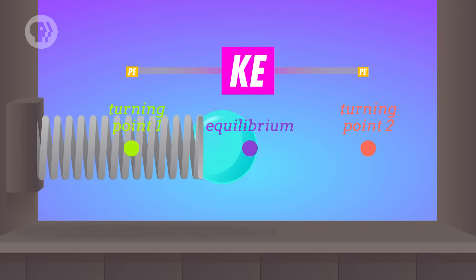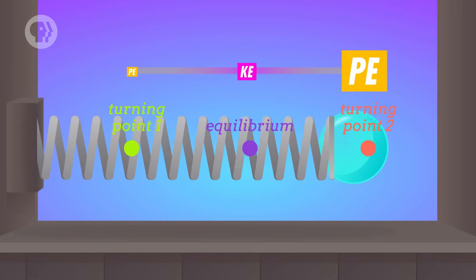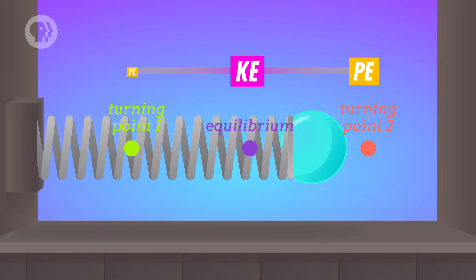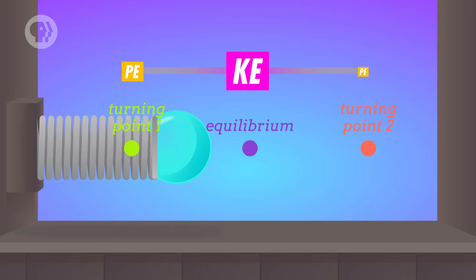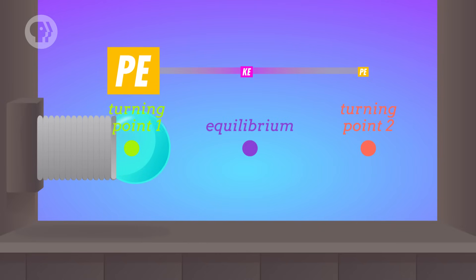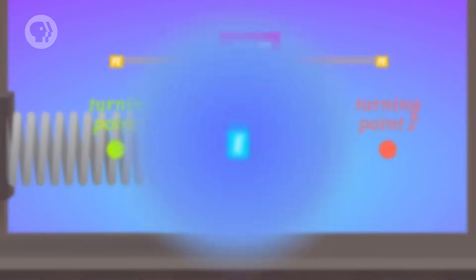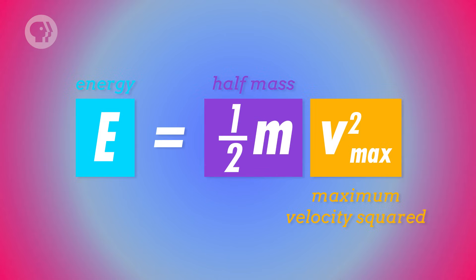And exactly in the middle of the ball's motion, at the equilibrium point, its potential energy goes down to zero. The ball is back where it started, so the spring is no longer pulling on it. Its kinetic energy, on the other hand, has reached its maximum. Which means that at that point, the total energy of the ball will be equal to half of its mass times its maximum velocity squared.